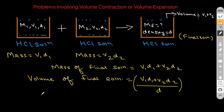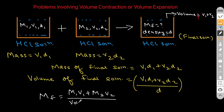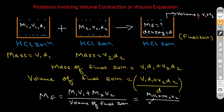The molarity of the final solution, Mf, equals moles of solute divided by volume of final solution. Moles of solute is m1·v1 plus m2·v2, and the volume of the final solution is (v1·d1 + v2·d2) divided by d. So the final formula is: Mf = (m1·v1 + m2·v2) / [(v1·d1 + v2·d2) / d]. Just remember this basic approach for calculating final molarity.